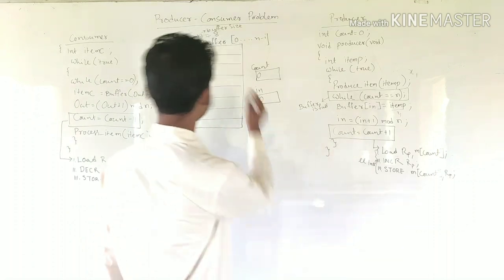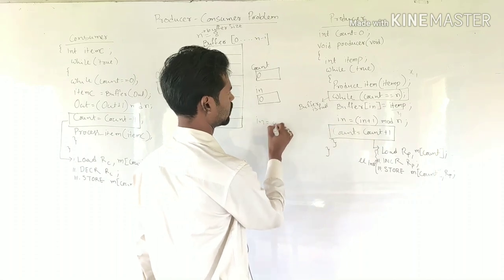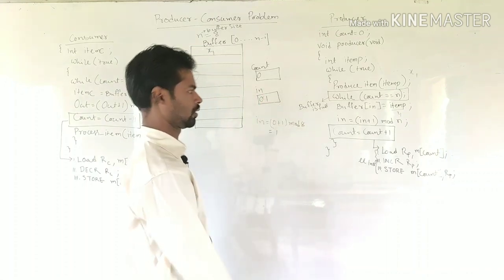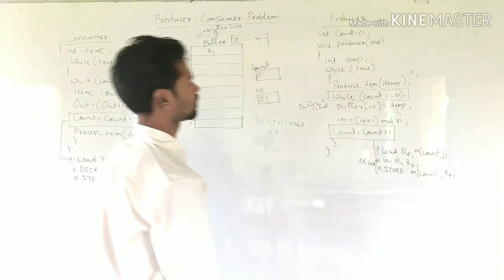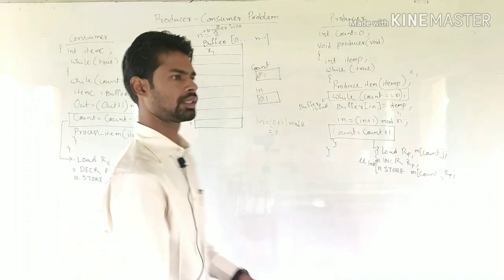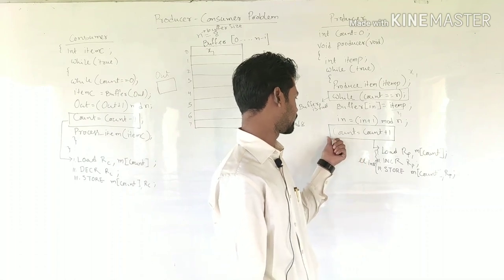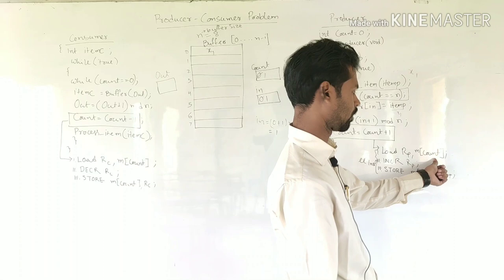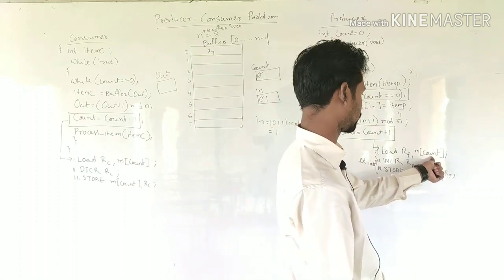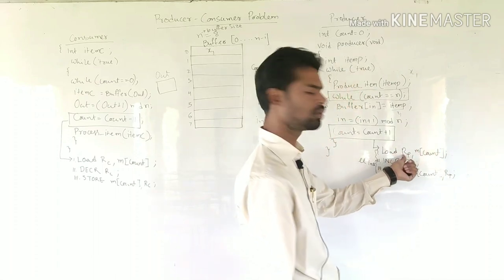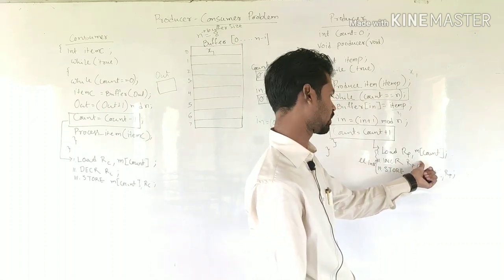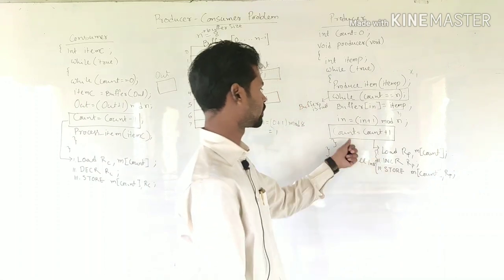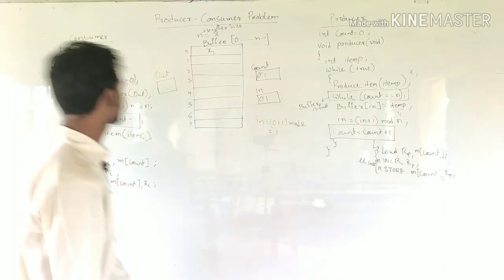After inserting x1, in = (0 + 1) mod 8 = 1, so in changes to 1. The next statement is count = count + 1. Inside the processor, this statement executes in three micro-instructions: first, load RP from memory location count; second, increment the register RP; third, store the register value back to memory count. This is how the count variable is incremented.